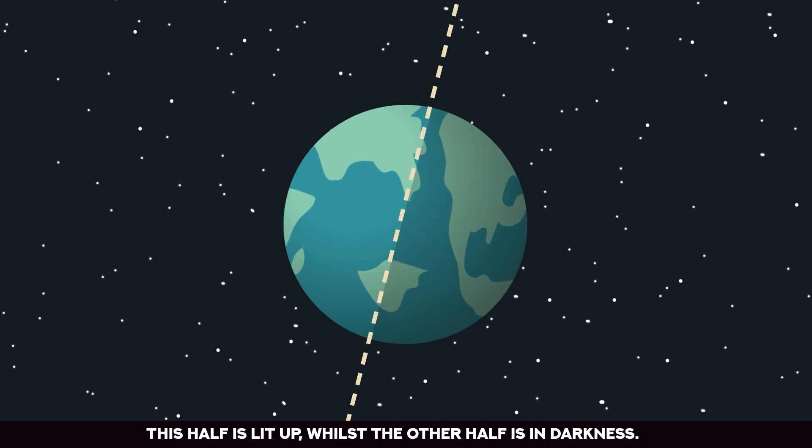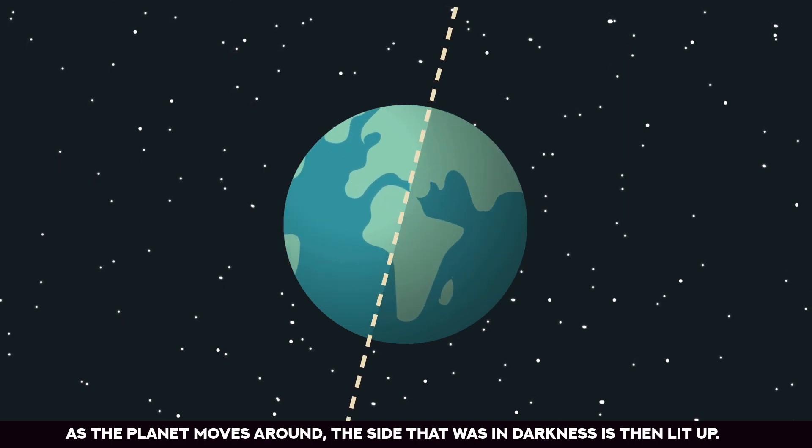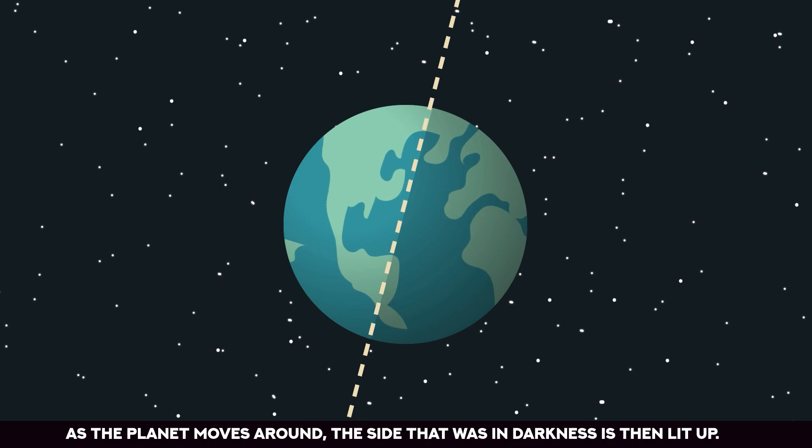This half is lit up whilst the other half is in darkness. As the planet moves around, the side that was in darkness is then lit up.